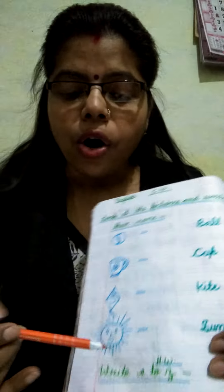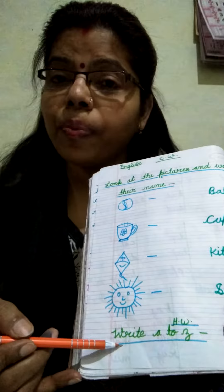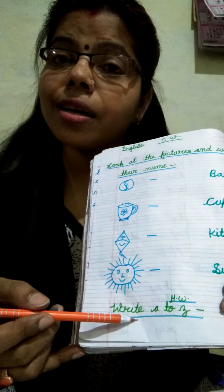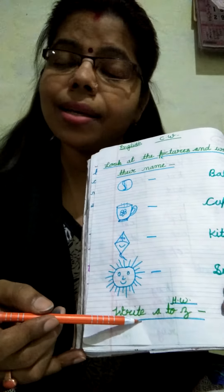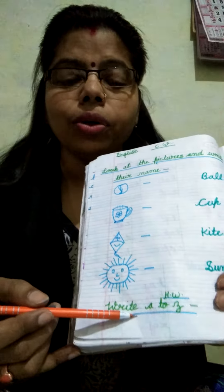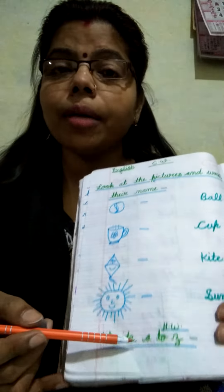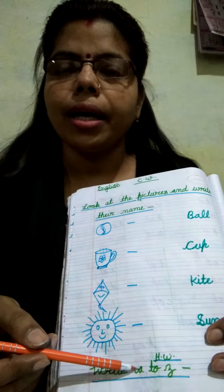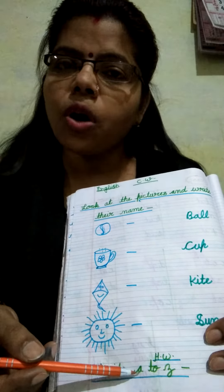Baita, yeh CW tha. Or HW phe kya hai? Write A to Z small letter in cursive. Cursive letter, baita — yeh HW hai. Small letter.